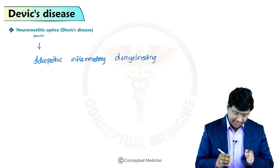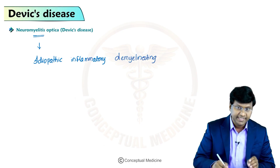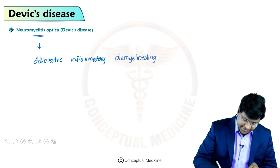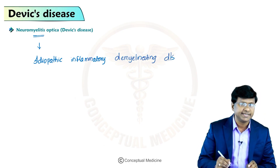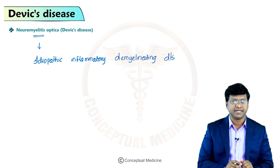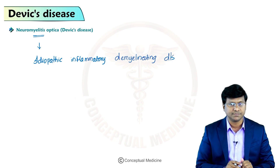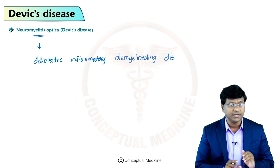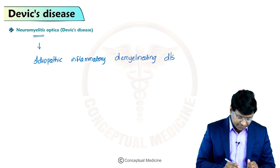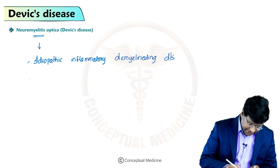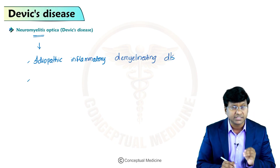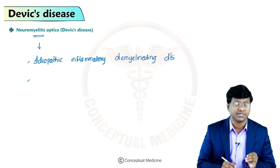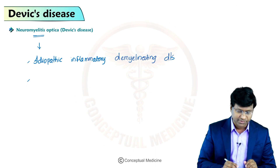It is an idiopathic inflammatory demyelinating disease, and it is distinct from multiple sclerosis. This neuromyelitis optica, or Devic's disease, has a worse natural history than compared to that of multiple sclerosis.